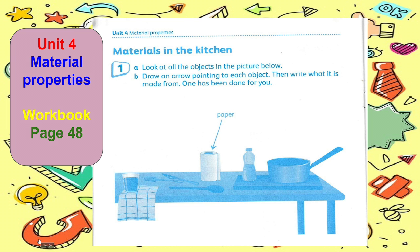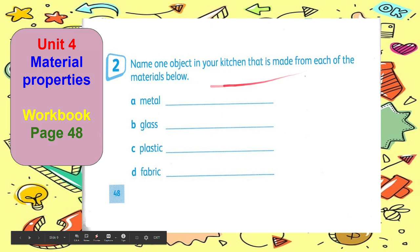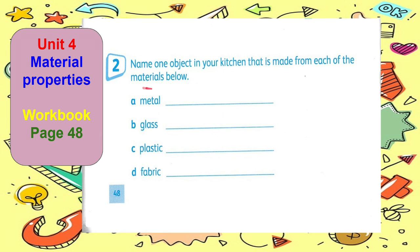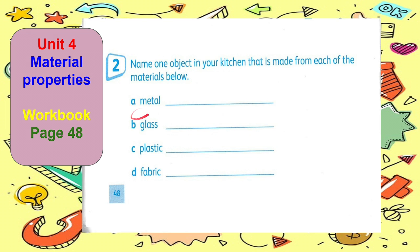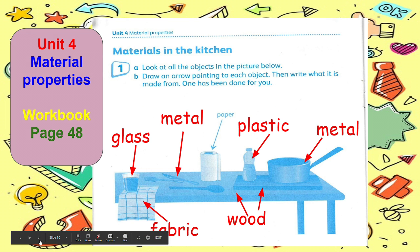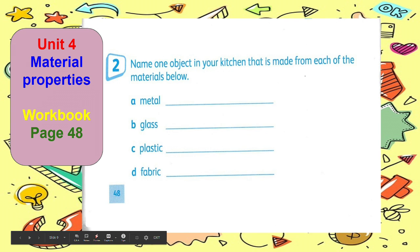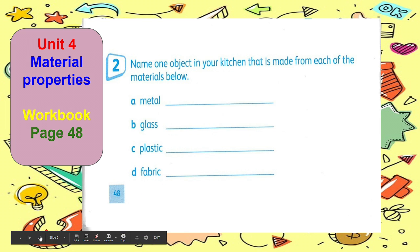In number two, name one object in your kitchen that is made from each of the materials below. For metal, what object do you think is metal material? That is a saucepan. How about glass? We will write here, bottle. And for plastic, we can write the spoon or the fork. How about fabric? We can write the towel.